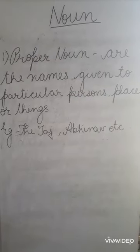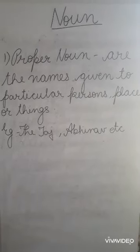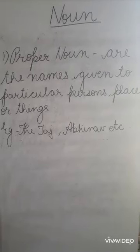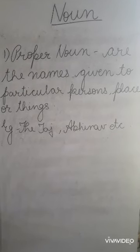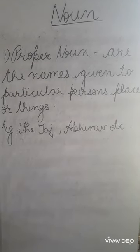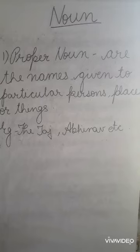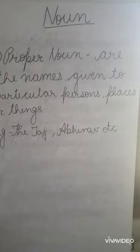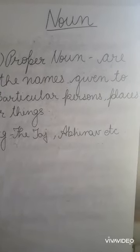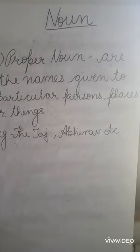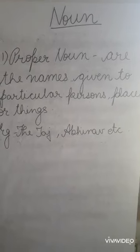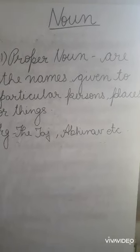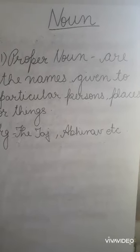The first kind of noun is proper noun. Proper nouns are the names given to a particular person, place, or thing. Basically, a proper noun is a noun which is given to a particular person, place, animal, or a thing. For example: the Taj, Abhinav, etc.